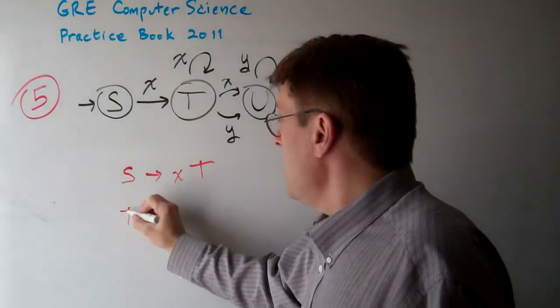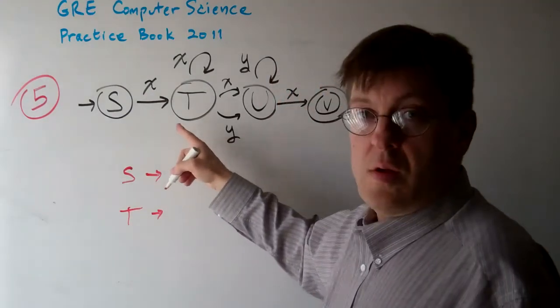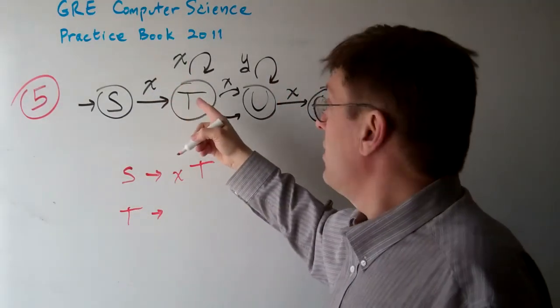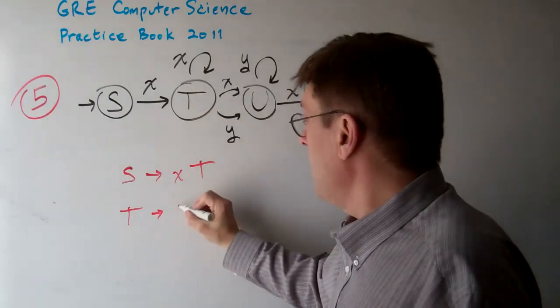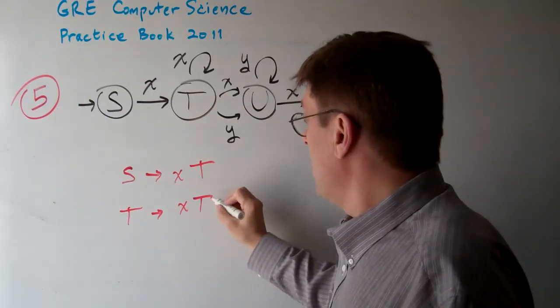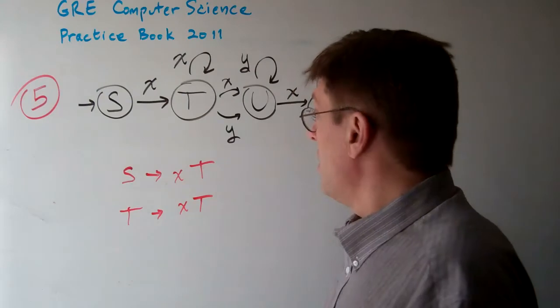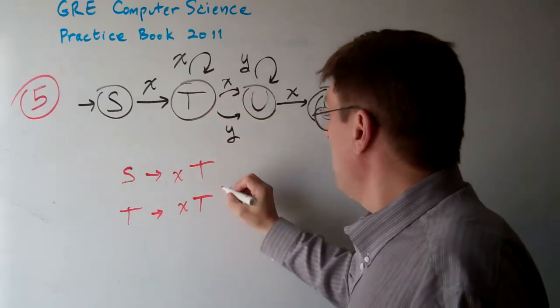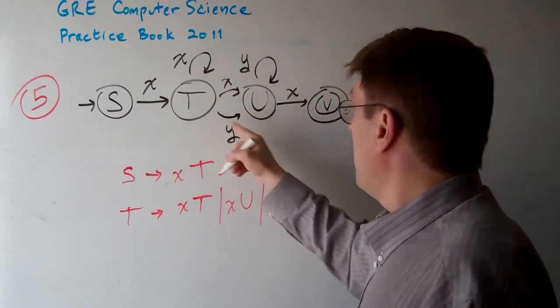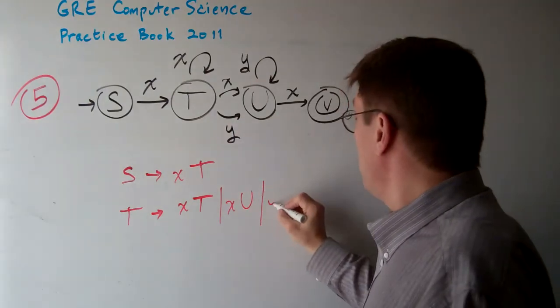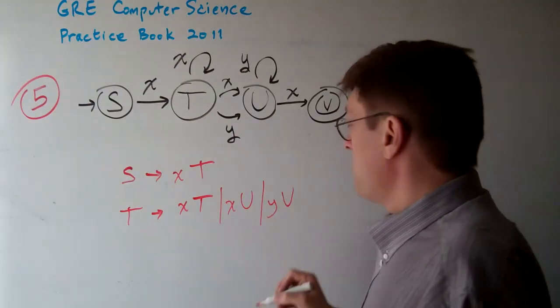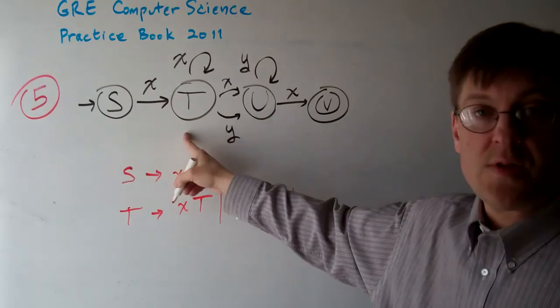Once we get to T, we can process an X and then come back to T. Or we can process an X and go to U. Or we can process a Y and go to U. Those are the only options from T.